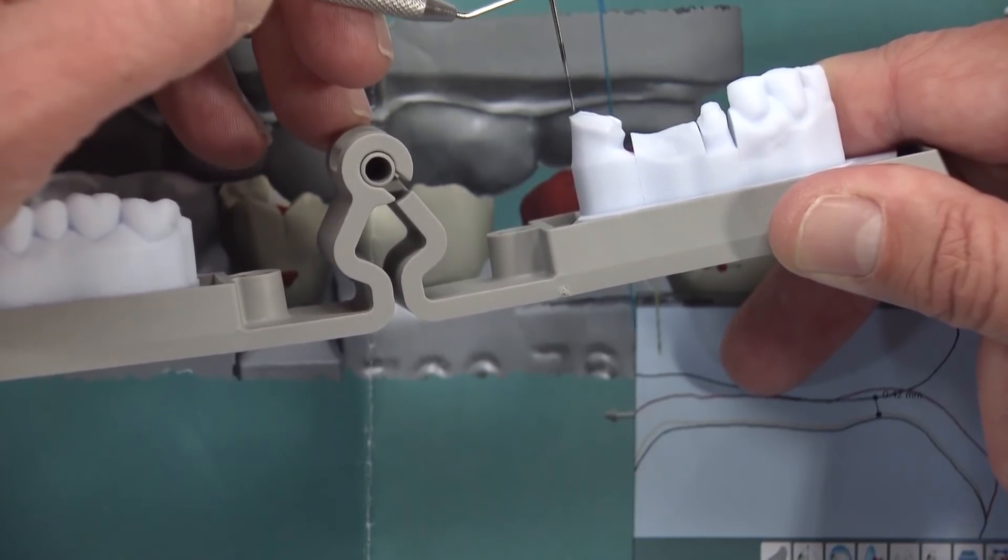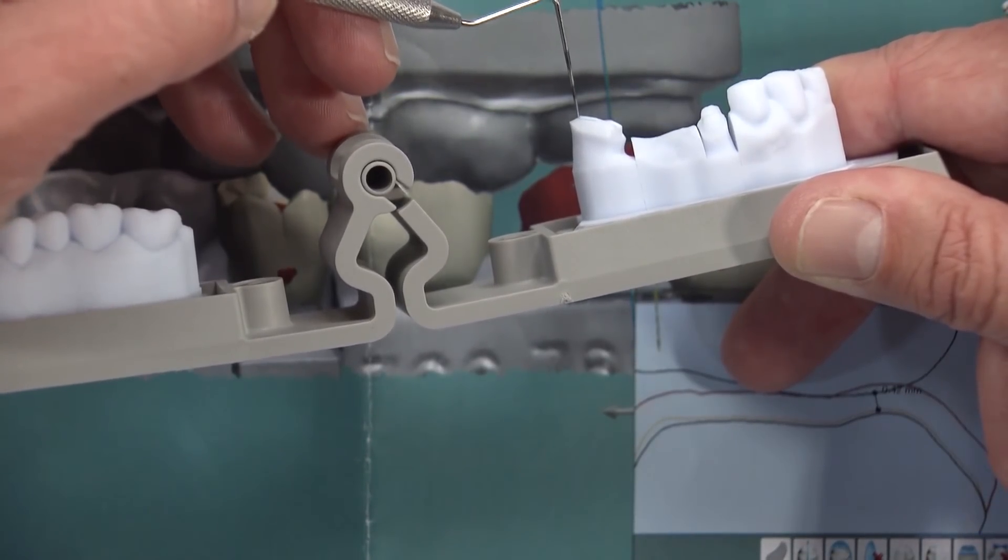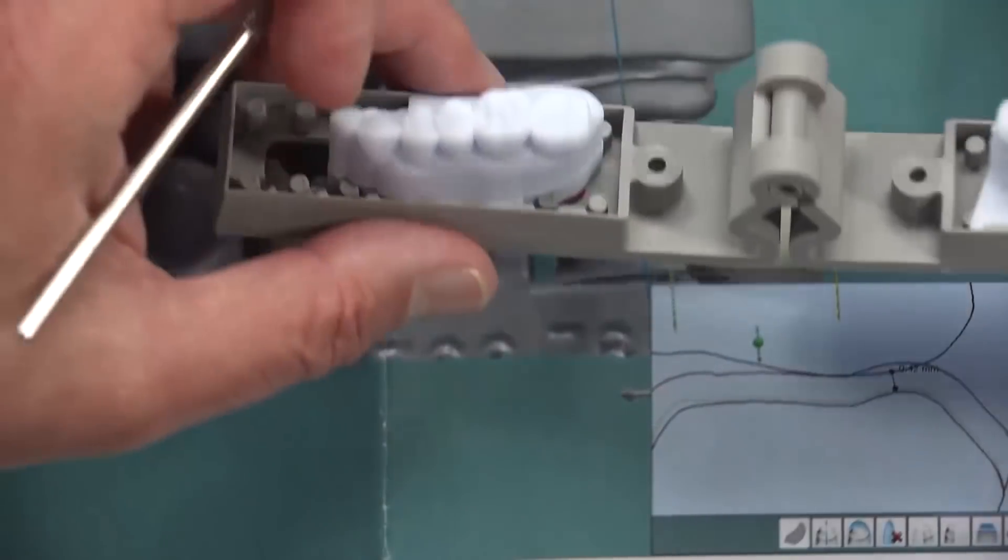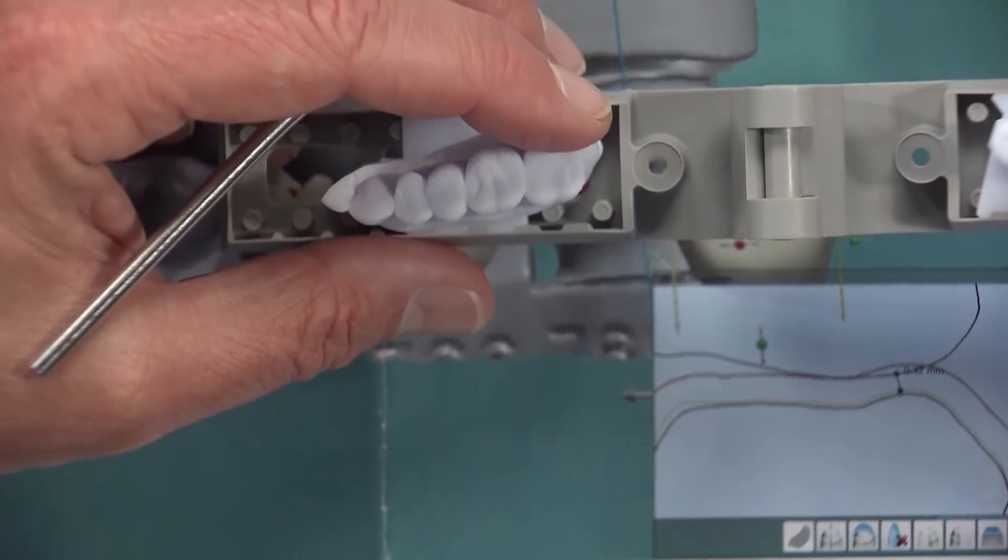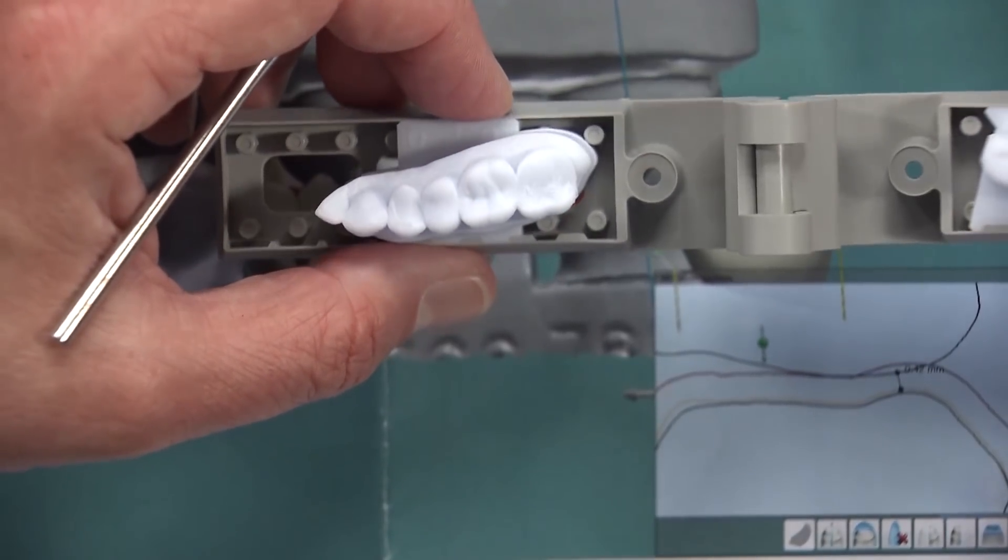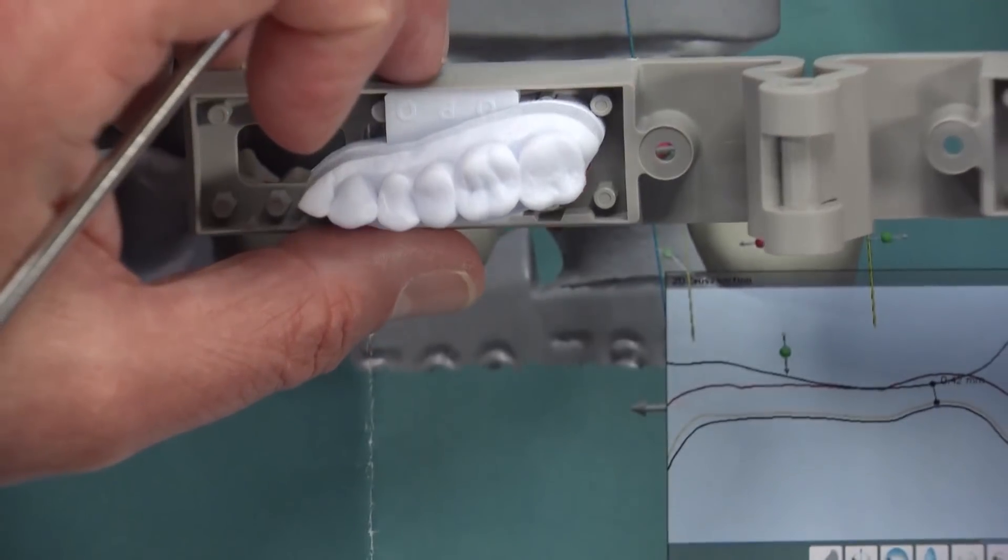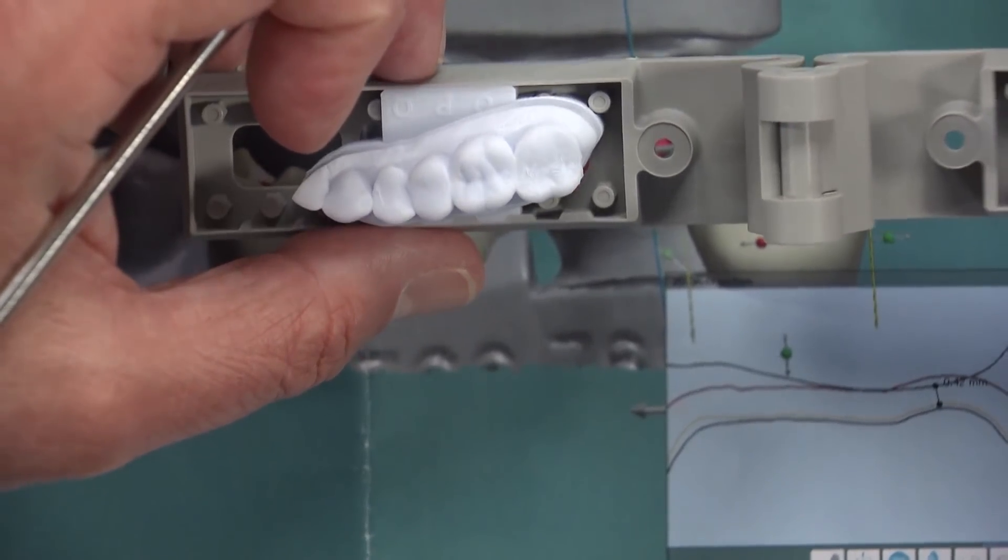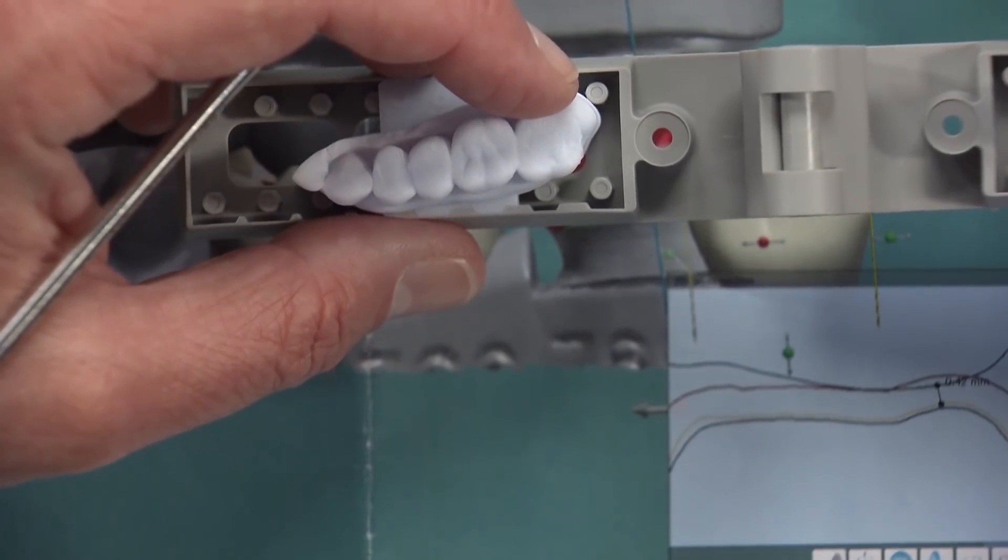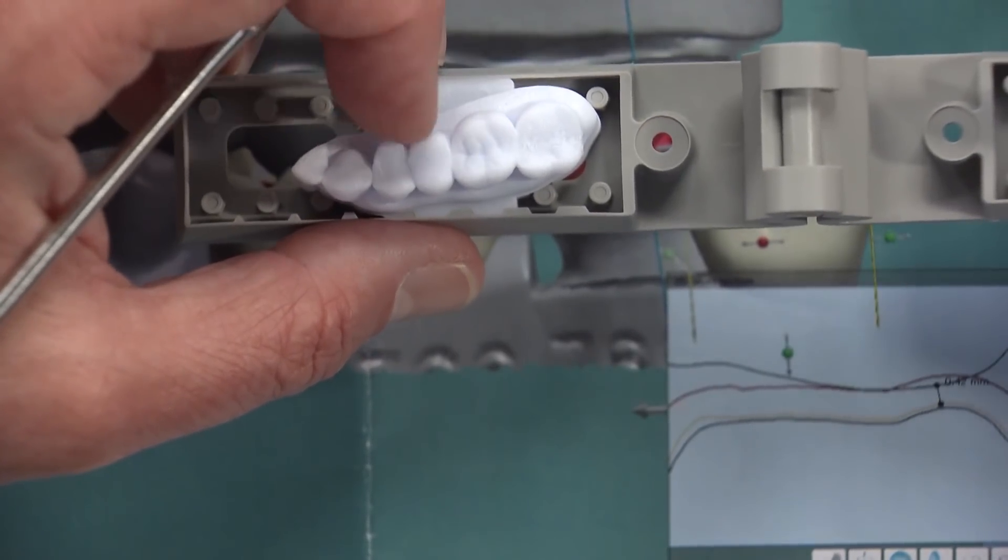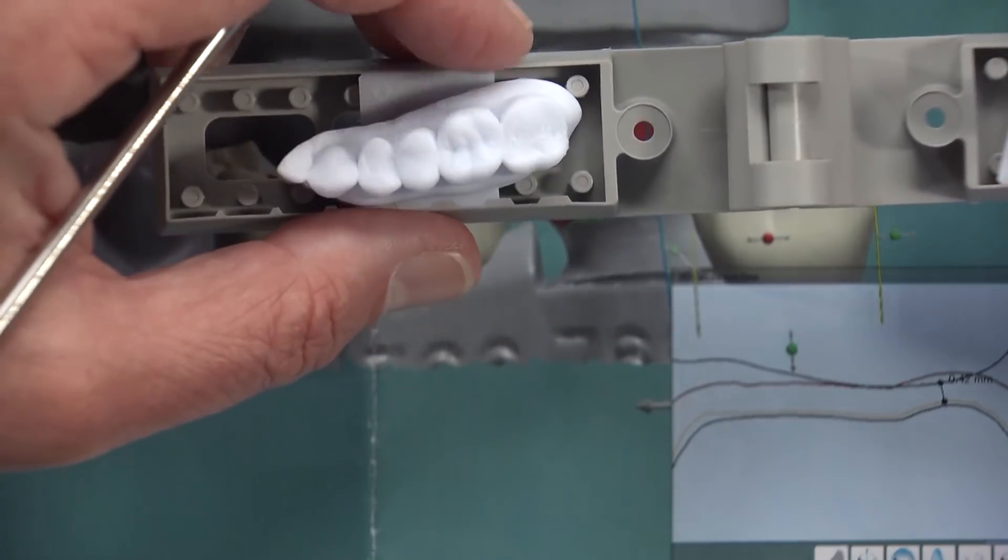The other way to create some more room here for a zirconia bridge would be to adjust the opposing. But you can see this crown, this second molar, looks like it's already been adjusted and adjusted and then adjusted a little bit more compared to the crown in front of it. So this appears to be something that's already been ground on a lot. Maybe that happened during this prep or maybe it happened before, but it looks like we probably don't want to do much more adjustment on that crown.